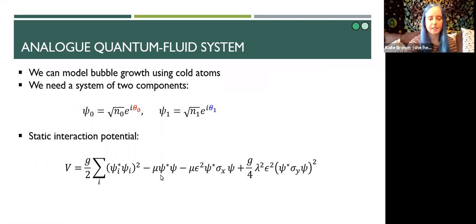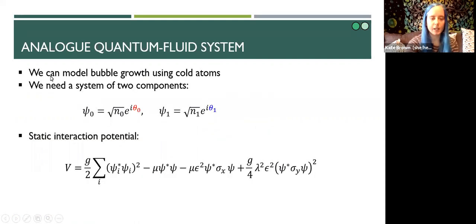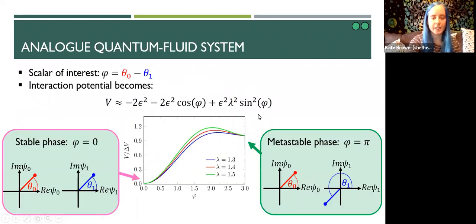The most important thing to note here is that the first three terms are self interaction terms which explain how particles of the same species interact. Whereas this final term here describes how particles of different components interact with one another. When we substitute these density phase forms of our wave function into this static potential, with a bit of algebra and some rescaling the result is this potential here. This potential only depends on the phase difference between our two atomic components, which I will denote by the Greek letter phi.